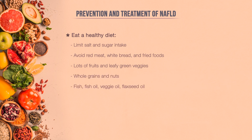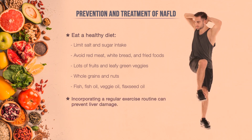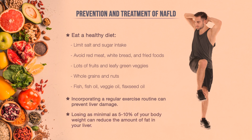Fish, fish oil, vegetable oil, and things high in omega-3 fatty acids like flaxseed oil are great resources for decreasing the excess fat that may be stored in the liver. Incorporating a regular exercise routine can help prevent and even sometimes reverse liver damage. If you are overweight, you have an increased risk of fatty liver and complications thereof. Losing as minimal as 5-10% of your body weight can reduce the amount of fat in your liver.